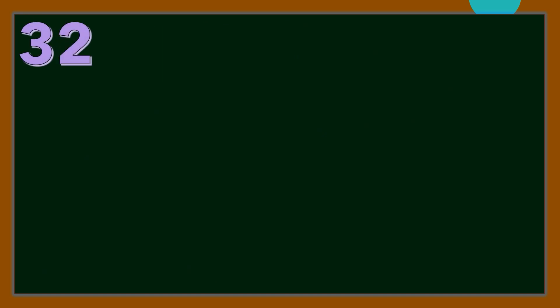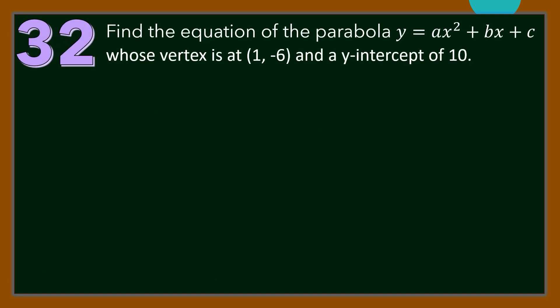Number 32. Find the equation of the parabola y equals Ax squared plus Bx plus C, whose vertex is at (1, negative 6), and a y-intercept of 10.